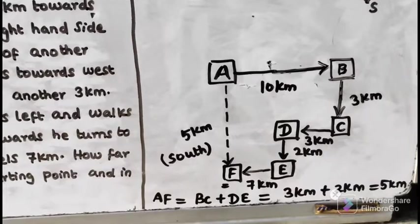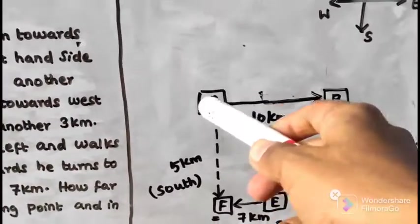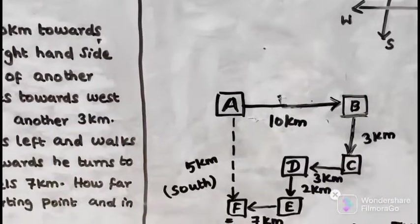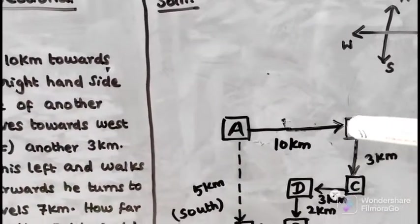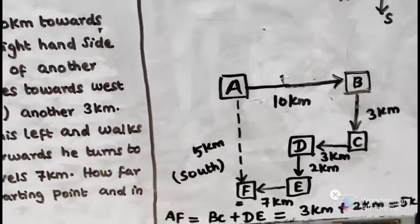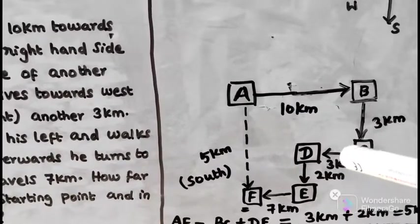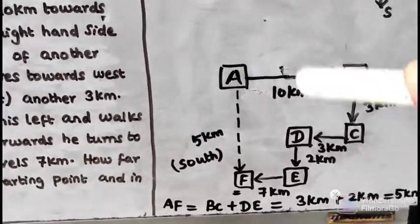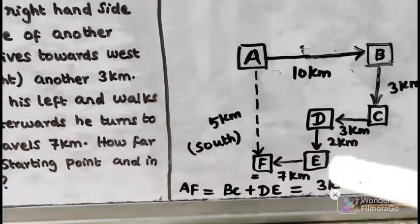Let's plot the data. One tourist is here at point A. First, he drives 10km towards East, reaching point B. Then right side turn, going South 3km, reaching point C. Then he drives West, turning right another 3km, reaching point D.